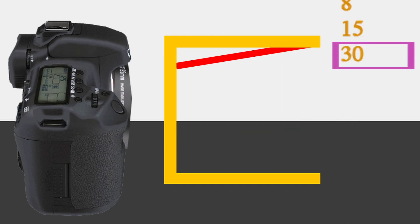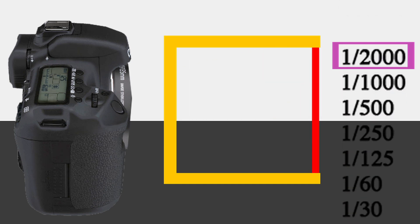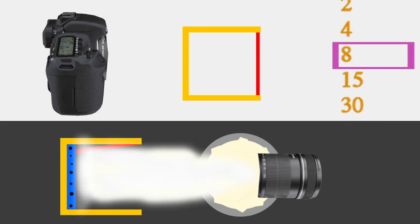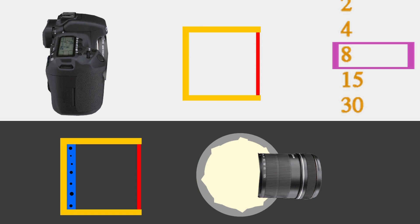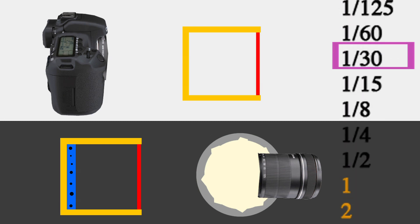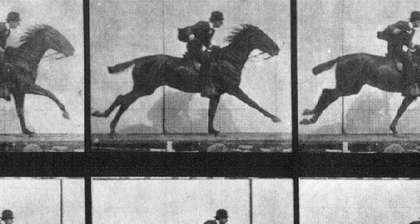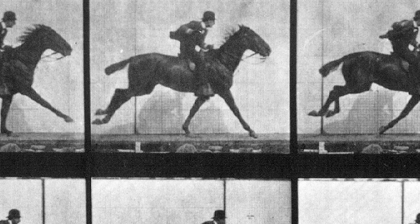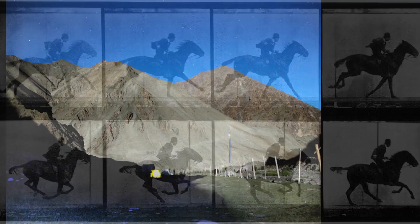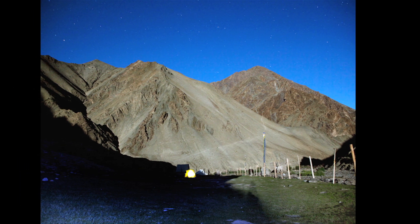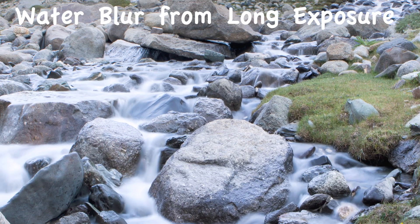The shutter speed ranges from leaving the shutter open for 30 seconds all the way to 1/2000th of a second. This controls how long you let light hit the ISO or film speed as it travels through the lens. In sports photography you'd use a higher shutter speed to avoid blur, while a slow shutter is used for time-lapse, night landscapes, or when shooting with a less sensitive film speed like ISO 25.